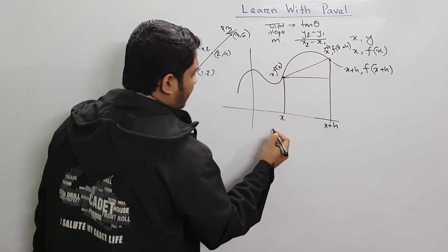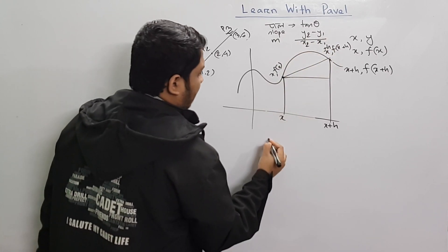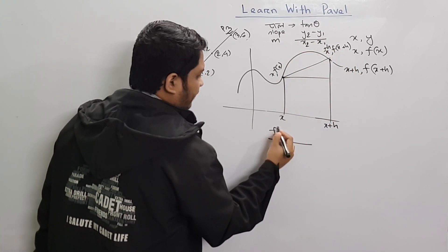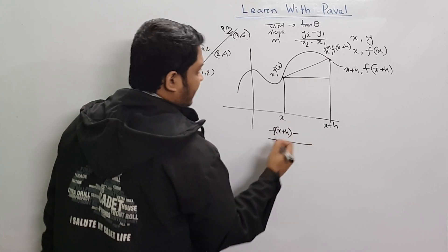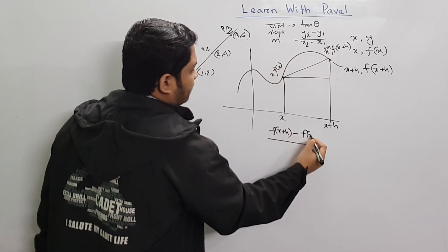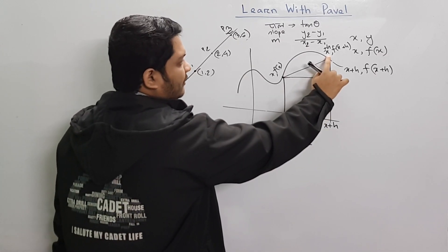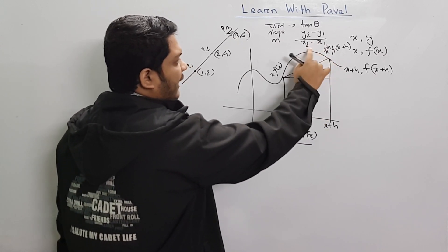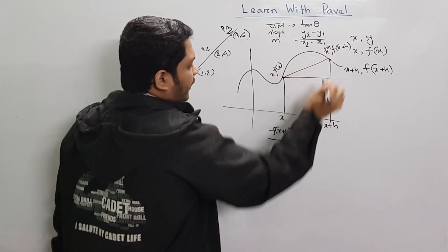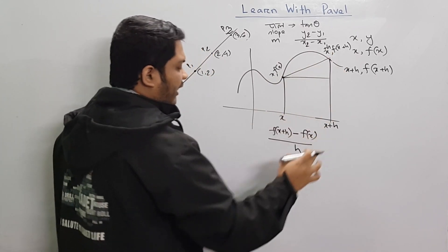This is y2 minus y1. y2 is equal to f of x plus h. f of x plus h minus y1 is equal to f of x. So this is x2. x2 is equal to x plus h, minus x1 is equal to x.